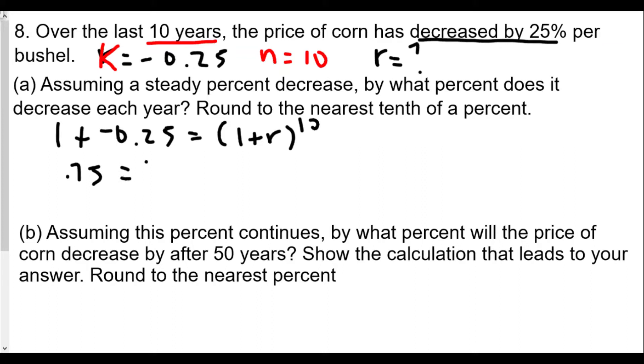Which really is 0.75 equals 1 plus r raised to the 10th power. To get 1 plus r by itself, we're going to raise both sides to the reciprocal of the exponent, which is the reciprocal of 10: one tenth.